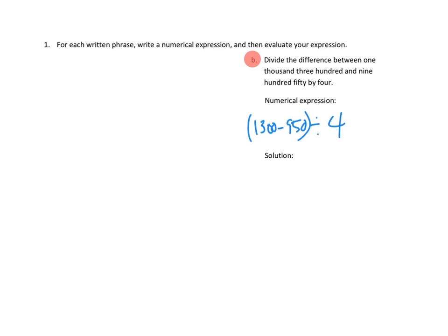And then how would we solve this? Well, first things first, we need to do what's in parentheses. So that's 1,300 minus 950. I can see that's going to have 300 here plus the 100 here, that's going to be 350 divided by 4. Well, 350 divided by 4, let's do it.